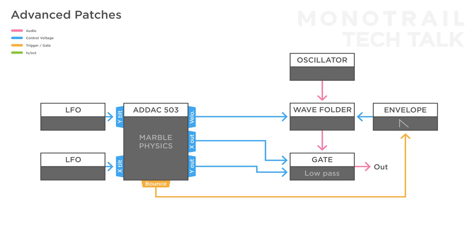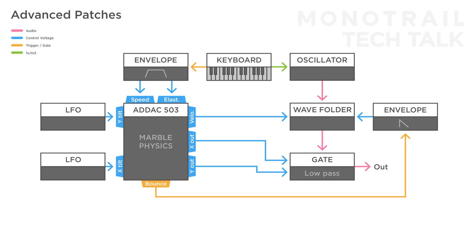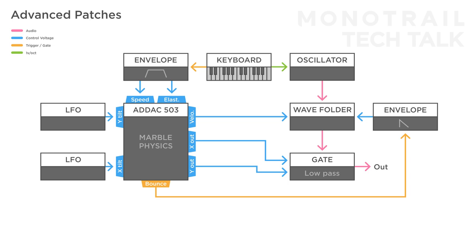Here you see the same basic setup, with Marble Physics modulating the folder and gate in a simple voice, as well as triggering an envelope modulating the wave shape, and two LFOs modulating Marble Physics. This time there is no sequencer though, because the oscillator is played with a keyboard. The gate output of the keyboard is used to gate a slow attack-hold-release envelope, and the envelope is used to modulate the speed and elasticity of Marble Physics. This creates fairly calm and steady tones when no key is pressed, and produces more chaotic motion when a key is held.